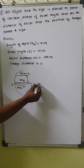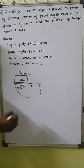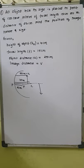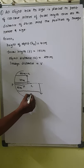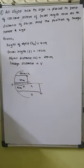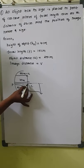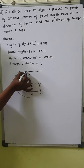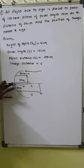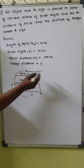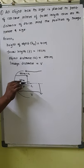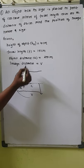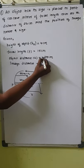You may have learned that if an object is between f and c, the image will form beyond c. The image will be real, inverted, and magnified. So the image distance will be greater than 30 centimeter. Now applying sign convention: light rays are coming in this direction. Object distance is measured from pole to object in the opposite direction to light rays, so object distance should be taken as negative.